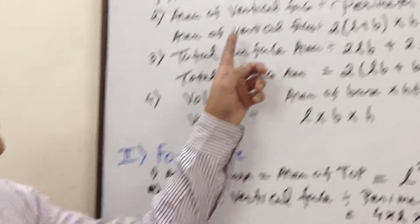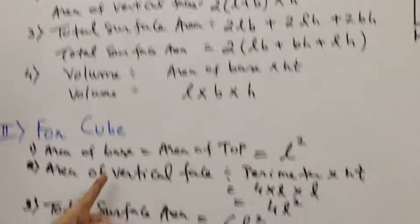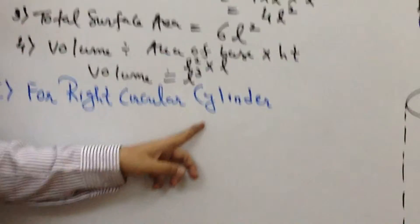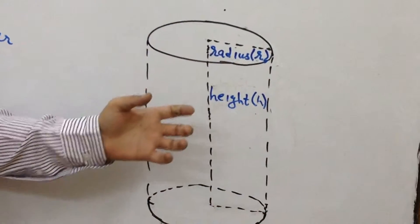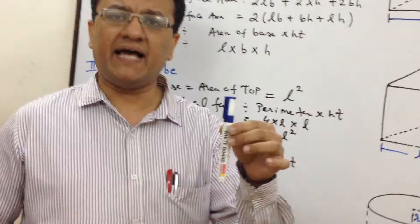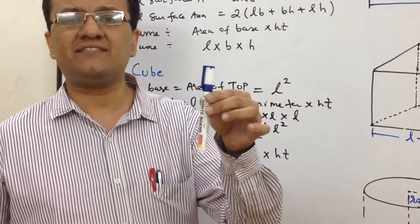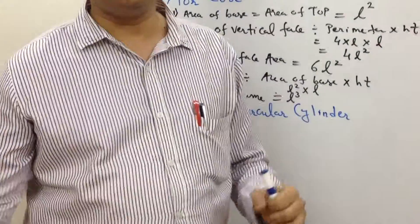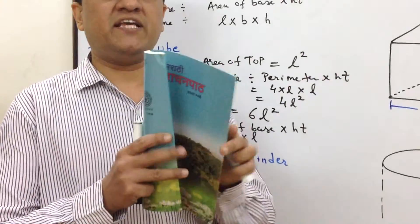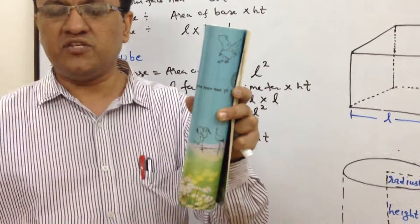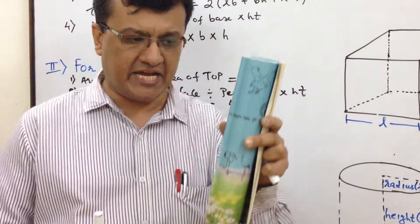Having studied two figures, rectangular parallelepiped and cube, now it's the time to focus on right circular cylinder. As the diagram suggests, it's a cylindrical object. If you look at this particular pen, this can also be termed as a cylinder. Even if you fold your book in this particular fashion, what you get is nothing but a cylinder. This is how a cylindrical object looks like.